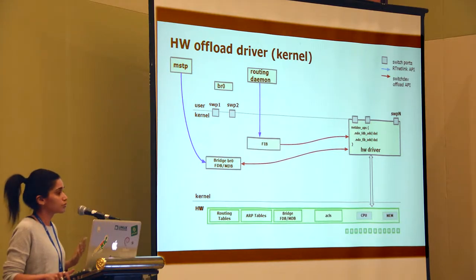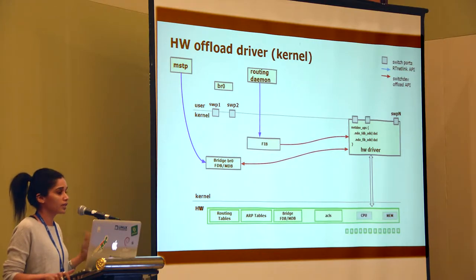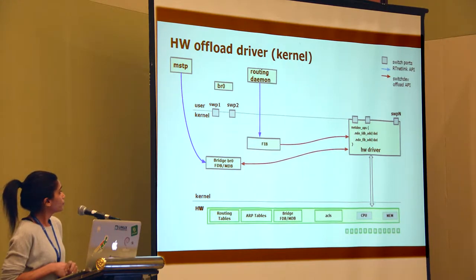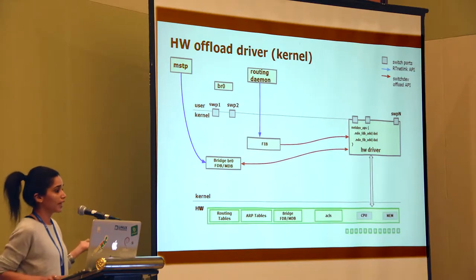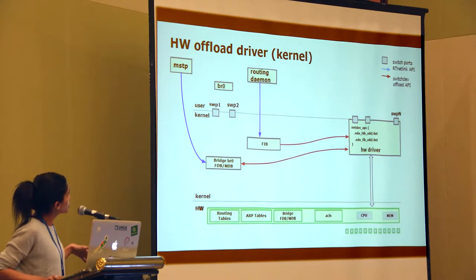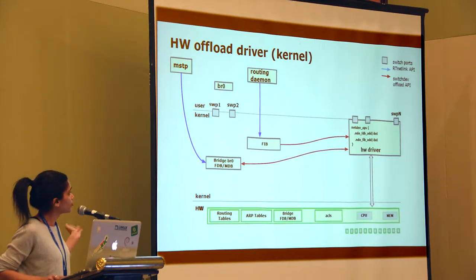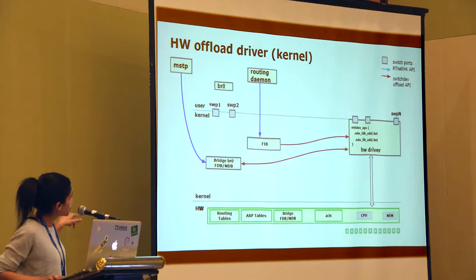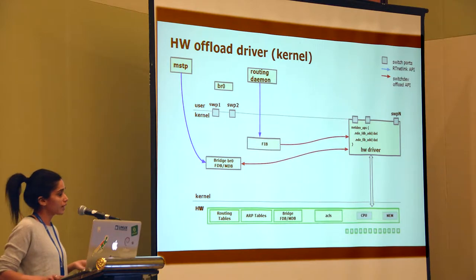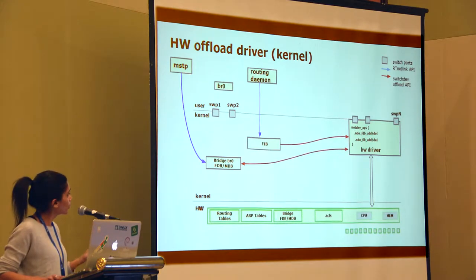This model should be familiar if you've been following recent kernel updates for switchdev and switch ASIC support. We've added NDO ops in the kernel to offload directly from the kernel path. In this picture, a routing daemon communicates via RTNetLink to the kernel FIB, and the kernel FIB in turn calls NDO ops directly to the switch driver. Same goes for bridge — the MSTP and STP daemon in user space communicates with the bridge driver via RTNetLink, and the ops are forwarded to the switch driver.